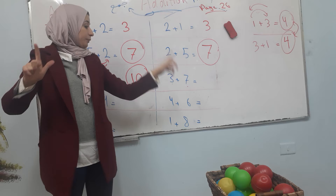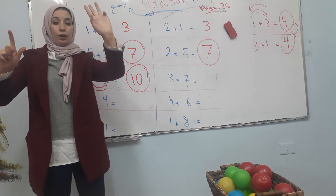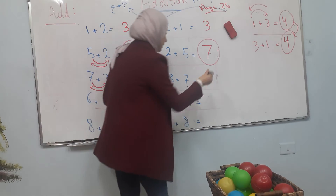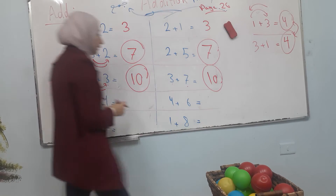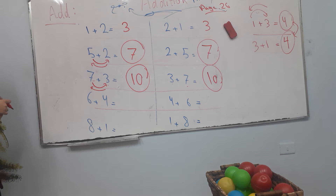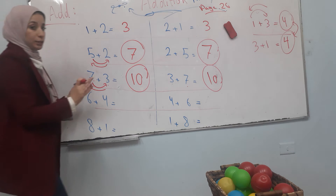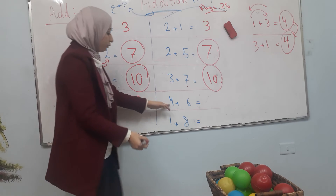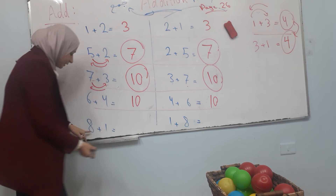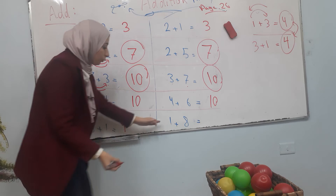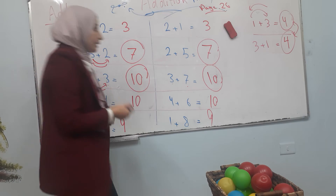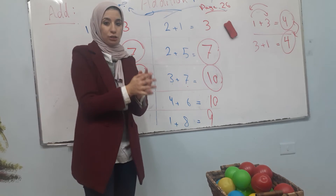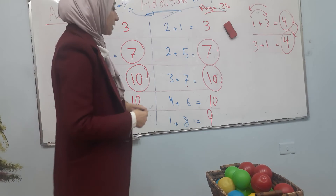Now if reversed: three in my head, count up seven steps — four, five, six, seven, eight, nine, ten. النتيجة نفسها ten. إذا عكست الأرقام في الجمع، النتيجة بتضل زي ما هي. Six plus four equals ten. Four plus six equals ten. Eight plus one equals nine. One plus eight equals nine.